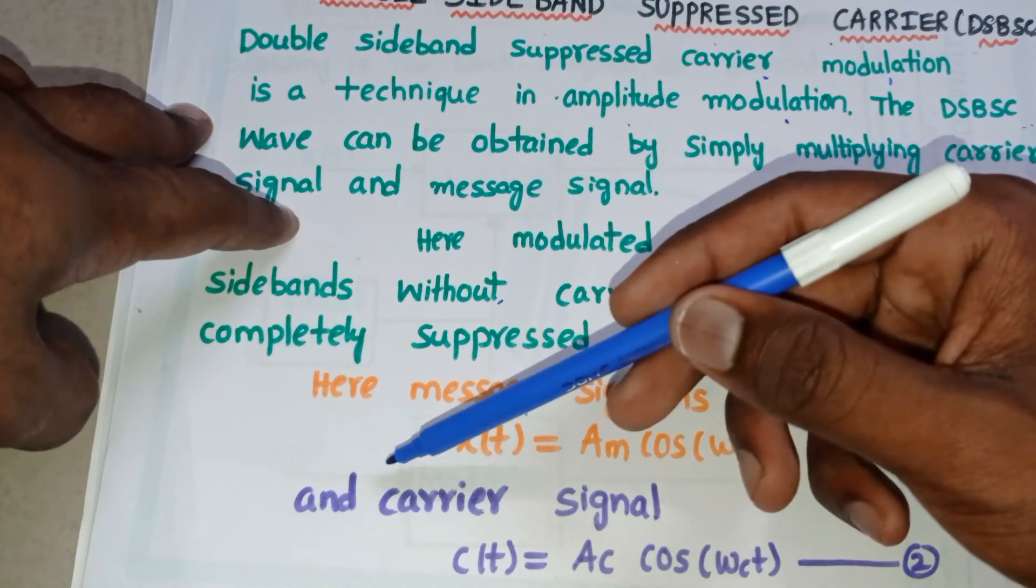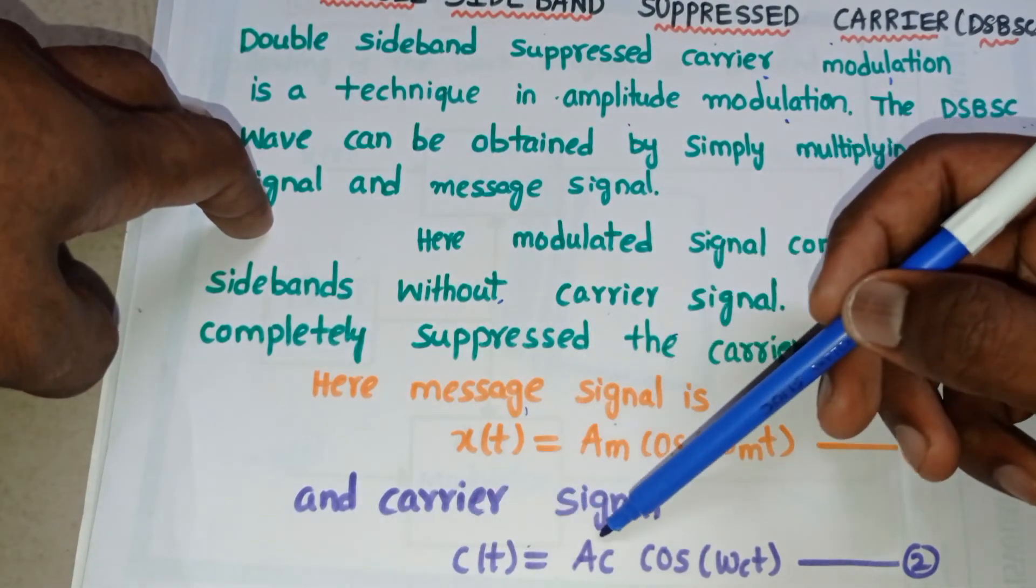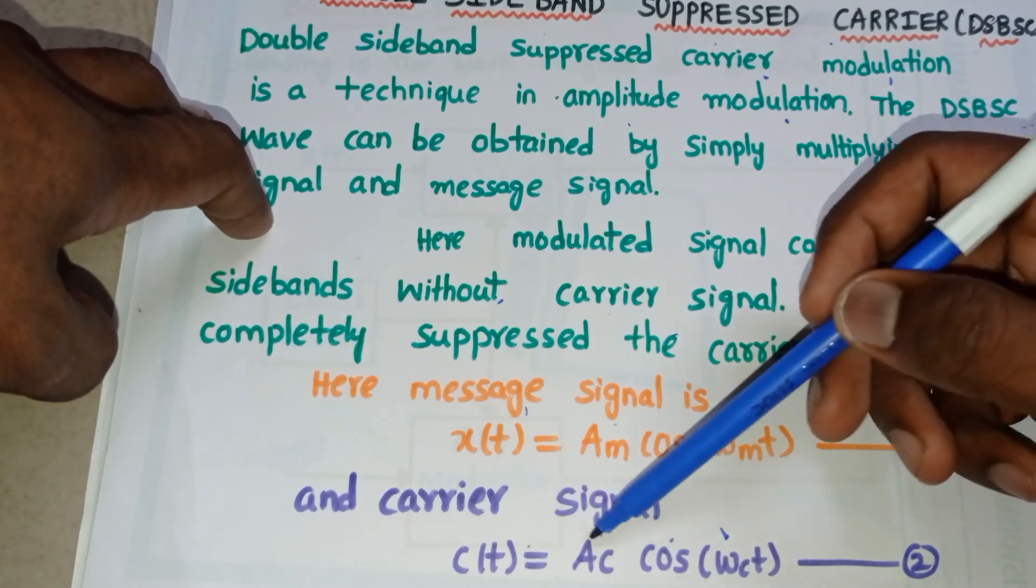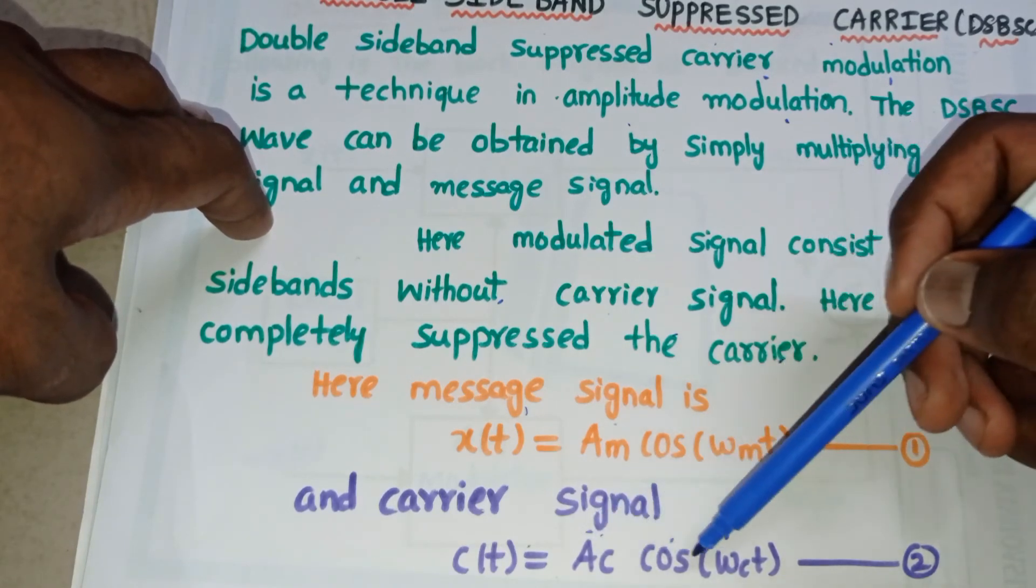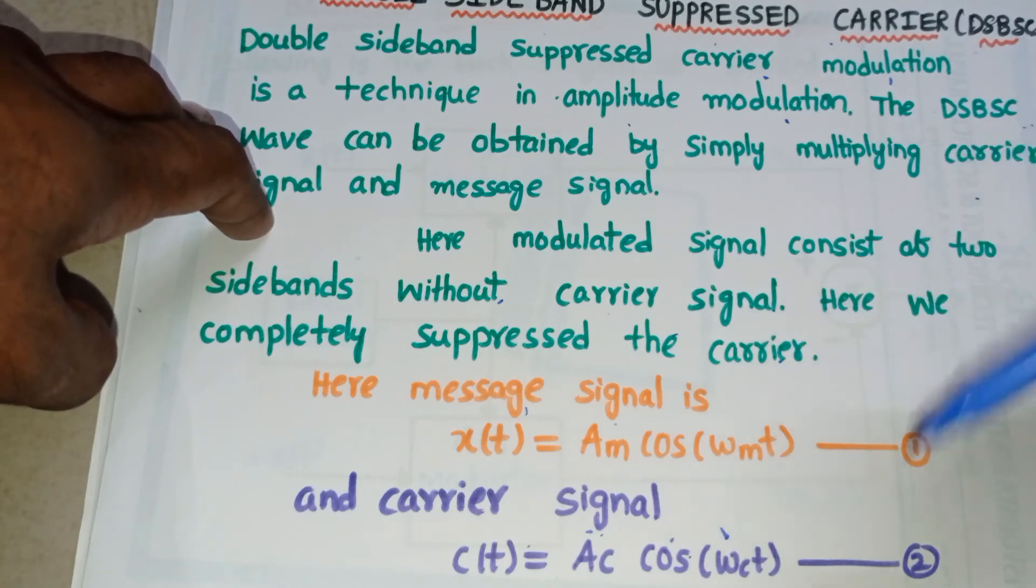Next, see the carrier signal. Carrier signal C(t) equals Ac cos(ωct). Ac is the amplitude of the carrier signal, and cos(ωct) is the frequency of the carrier signal. Consider this as equation number two.